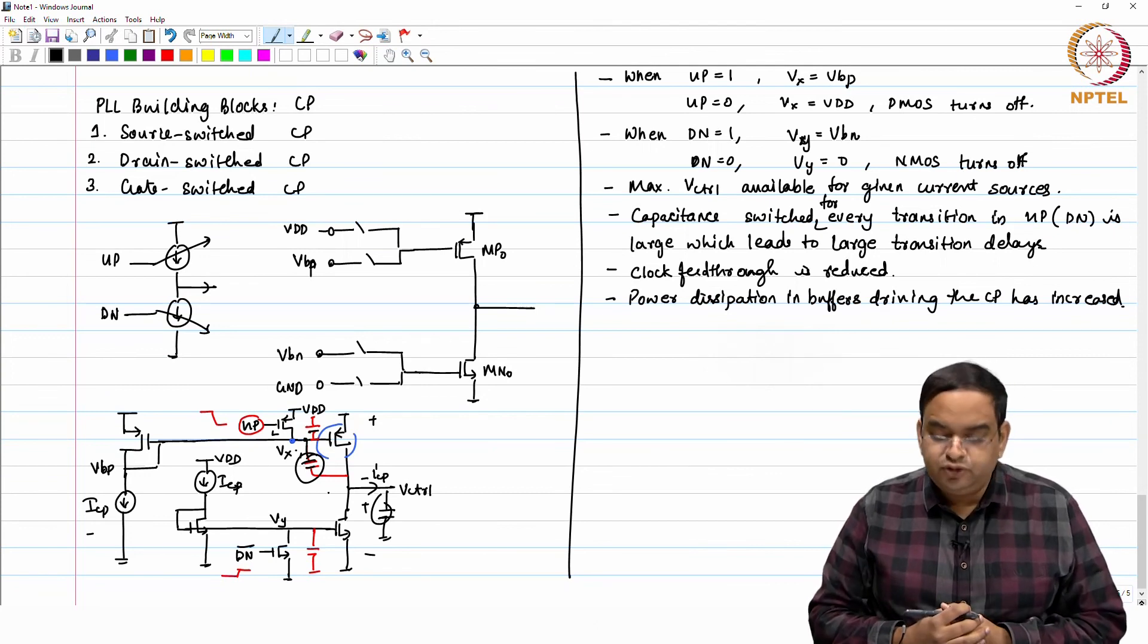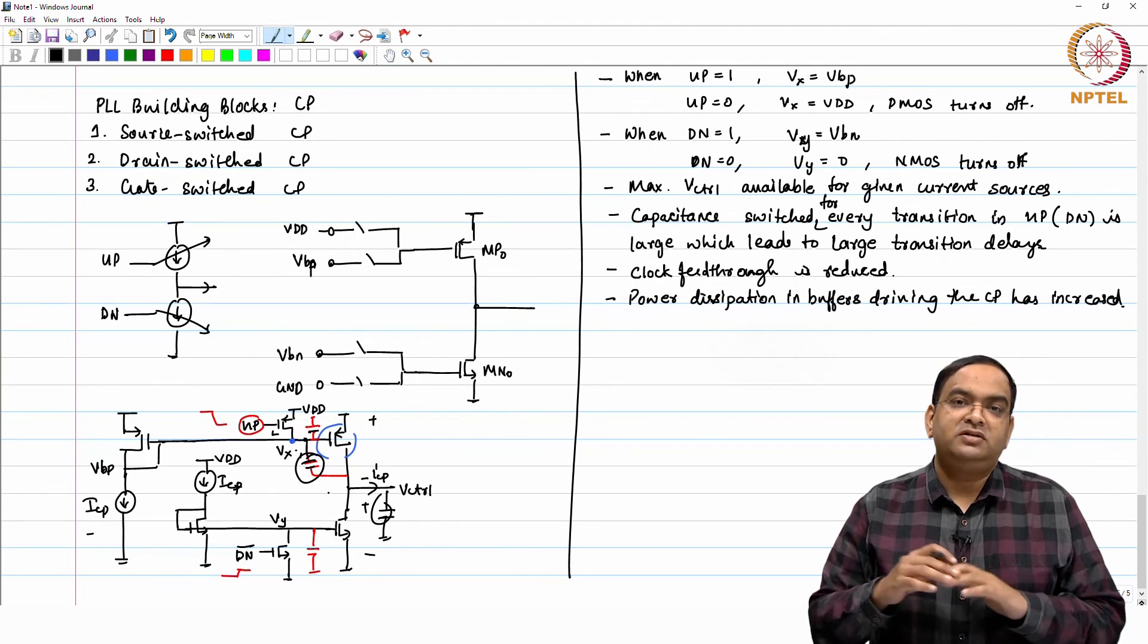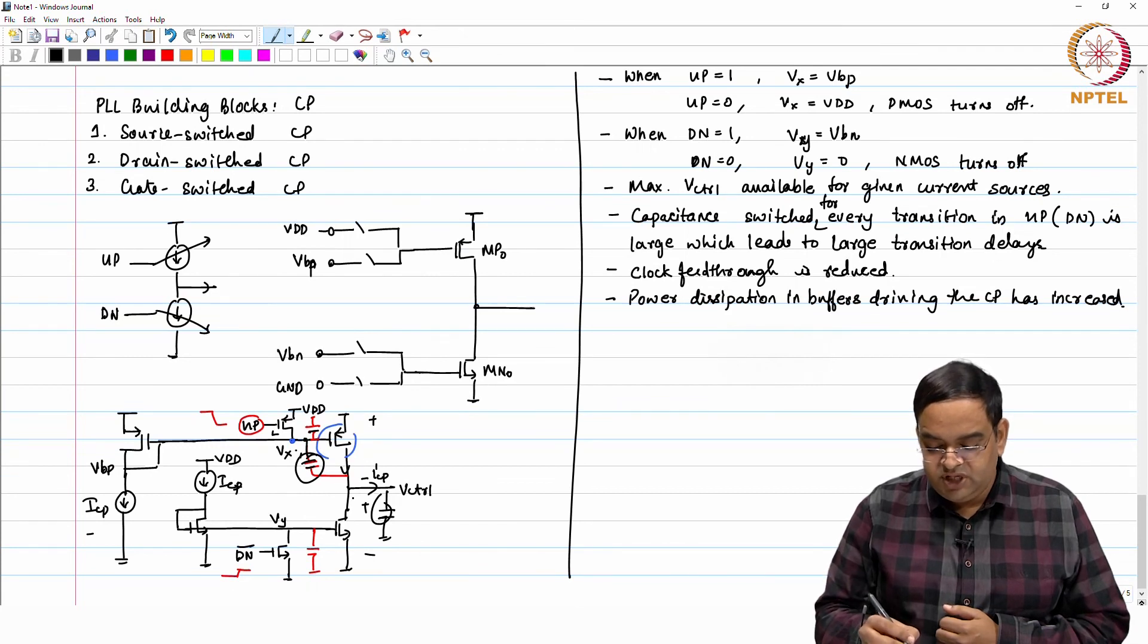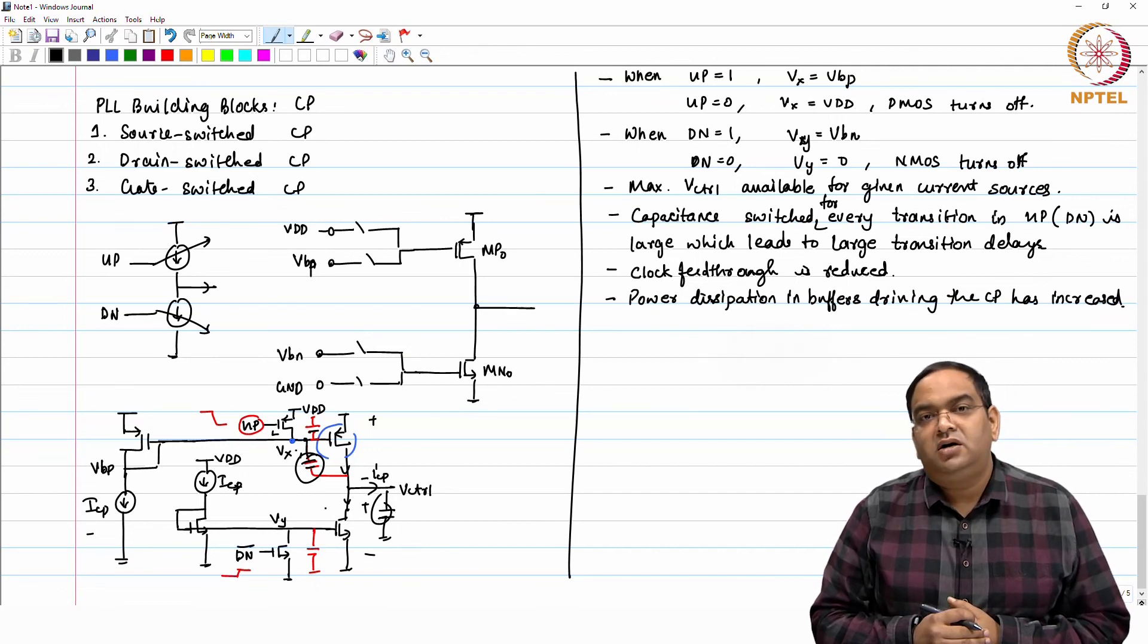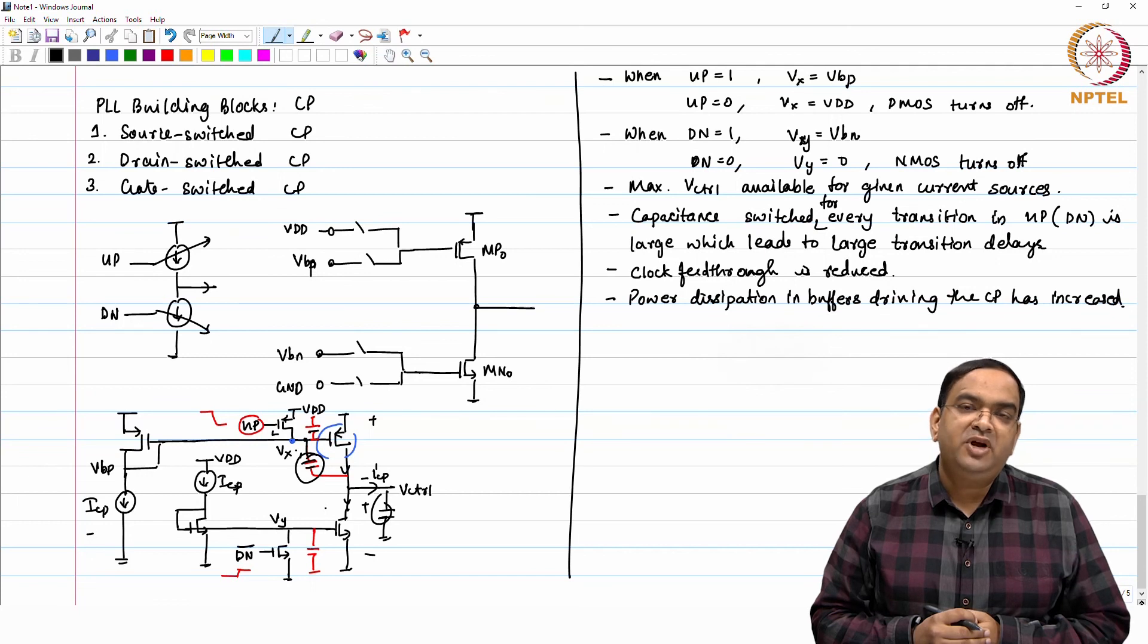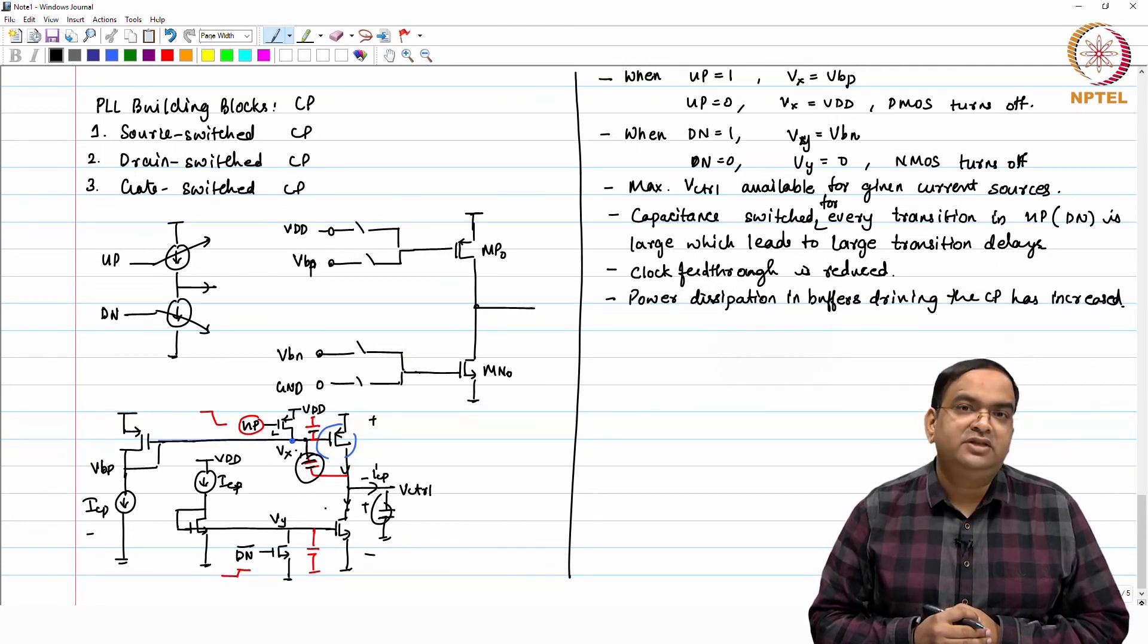You have seen the clock feed through and the region of operation for different sources. Now, whatever we have done so far, we have only made sure that we have used the bias circuits also for the current sources that once all this dynamic is over, once the current settles then I up current should be equal to I down current. That is what we have seen. But what we will see in the coming sessions is that first thing is whether this will happen across the range of the control voltage or not. And if there is a mismatch during the transition, what happens in the PLL, those are the things which we will cover in the next session. Thank you.